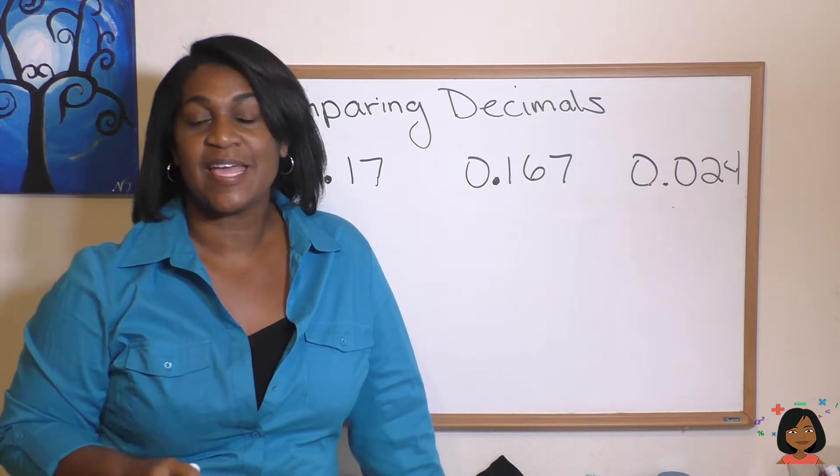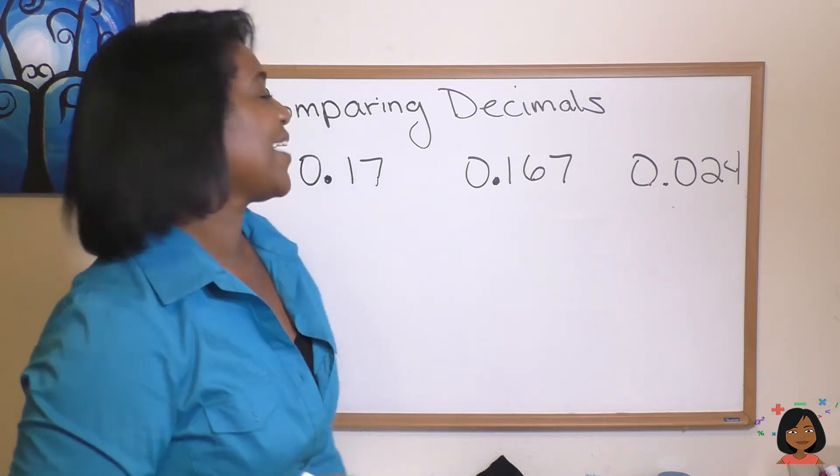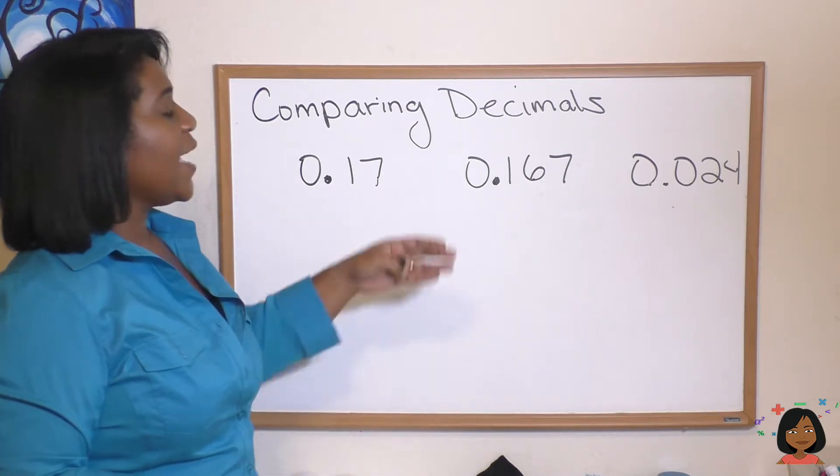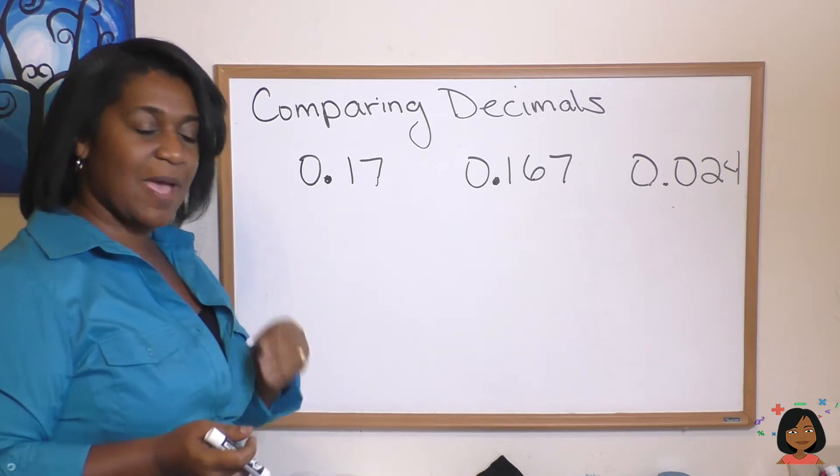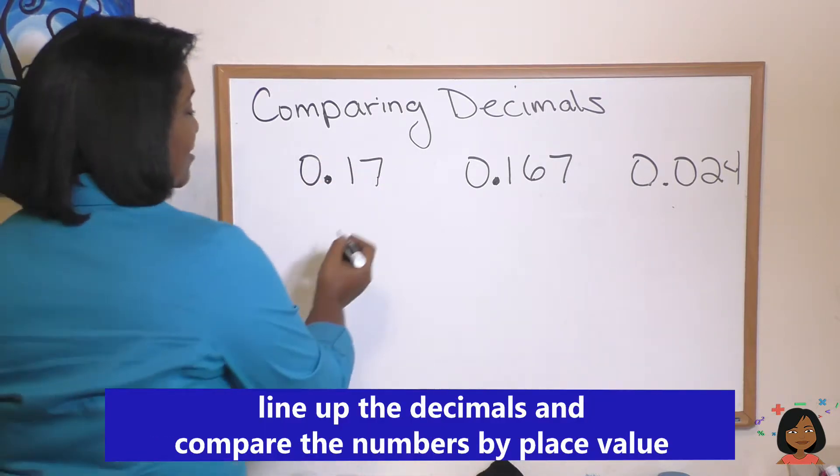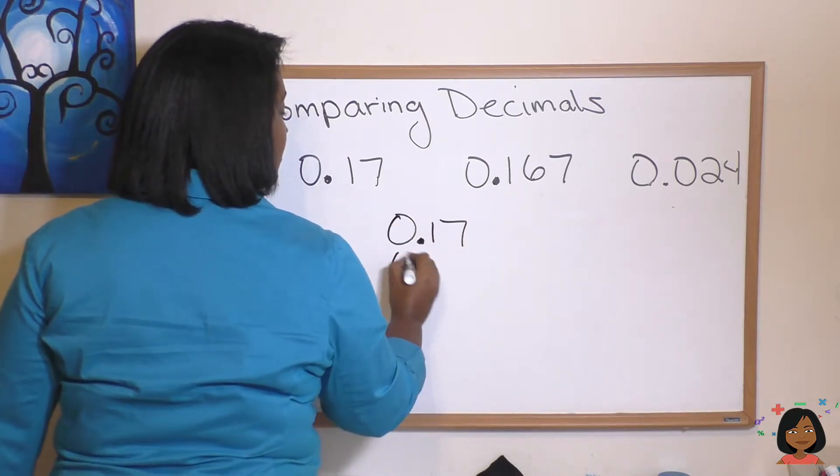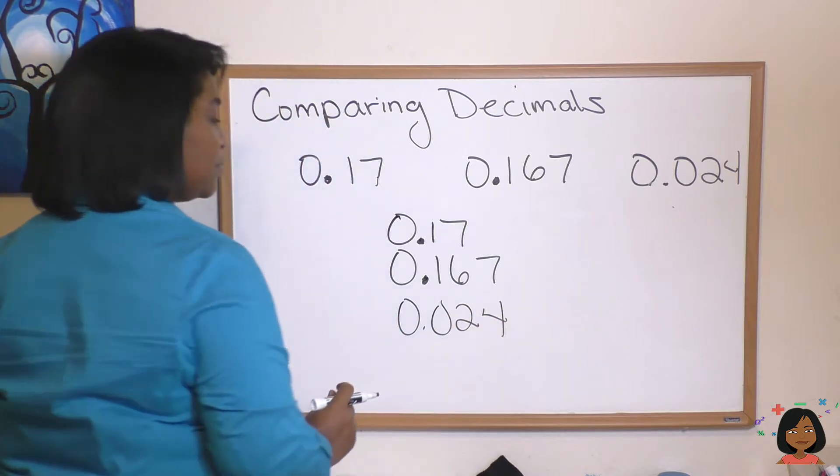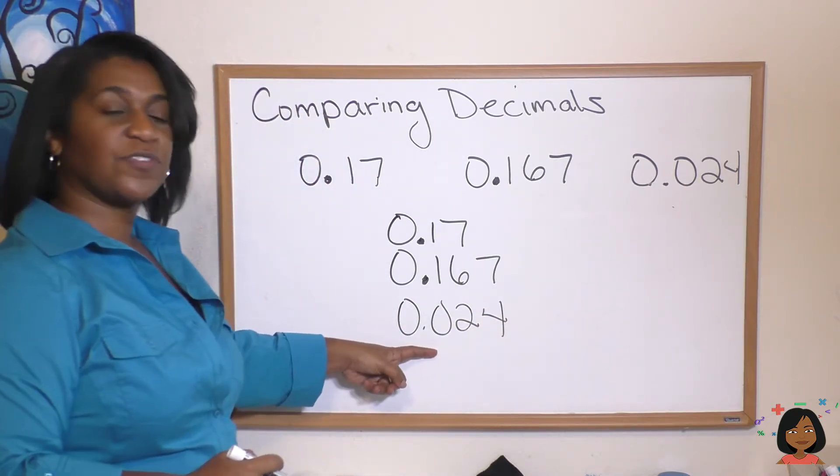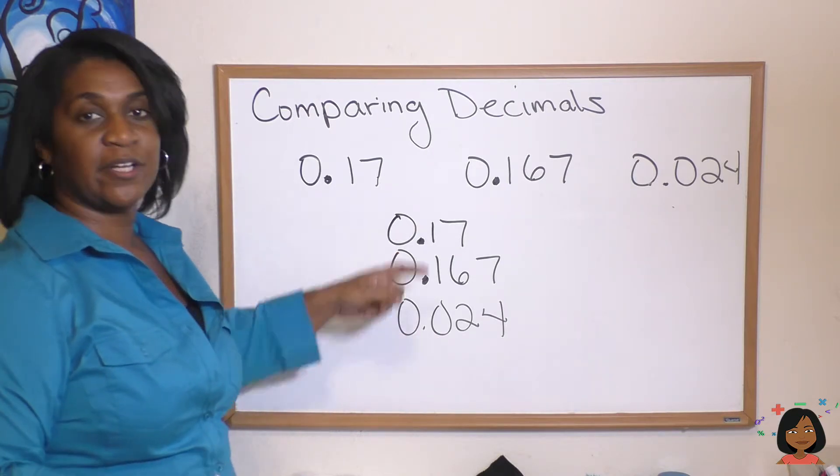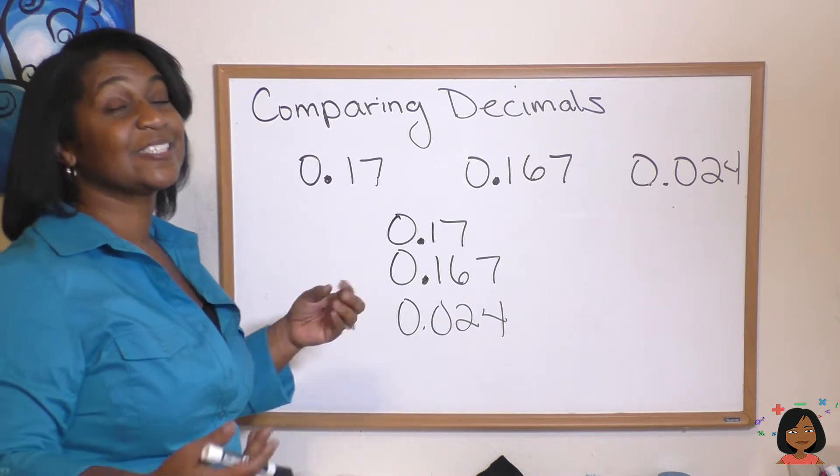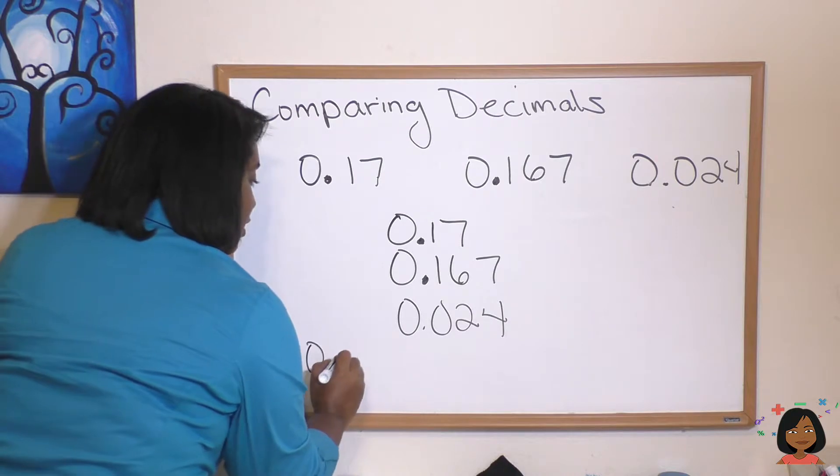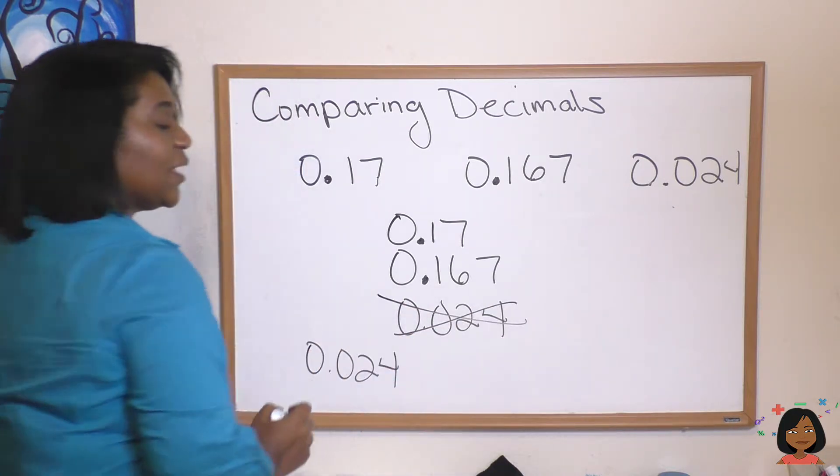Here's the key to comparing decimals: it's all about place value. You can see here we have three decimals: 17 hundredths, 167 thousandths, and 24 thousandths. What I'm going to recommend is that you line them up by place value: 0.17, 0.167, 0.024. Let's take a look. We start with the tenths place, and we see there's a zero here and a one here and here, so we know this is the smallest number. You always start with the tenths. We're going to put our first number, 0.024, as the smallest.